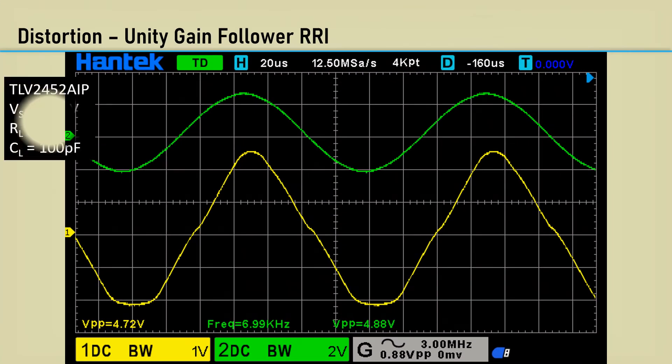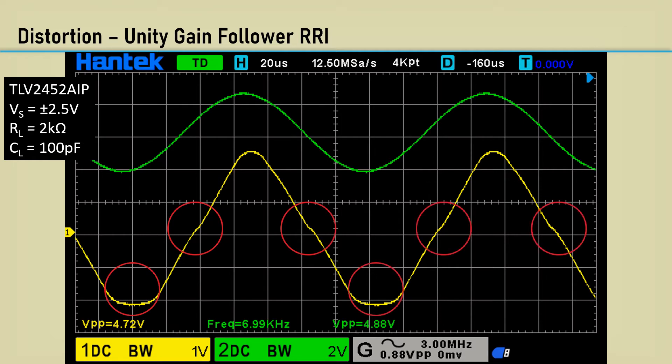I tested the TLV2452 as a Unity gain follower, the worst-case configuration with these test conditions. There is a noticeable distortion. It looks like typical Class AB output stage crossover distortion in the middle of the range, but is not due to the output stage.